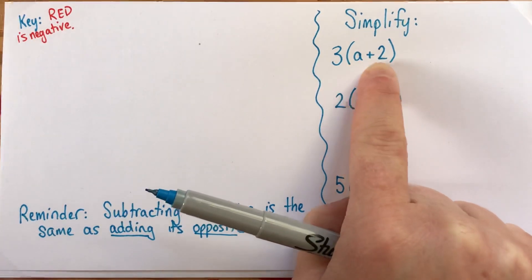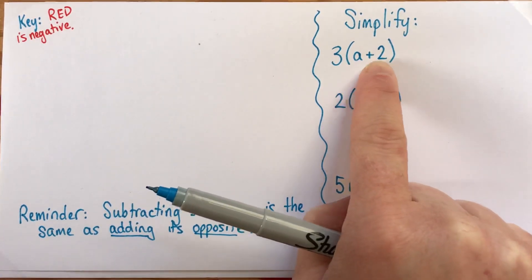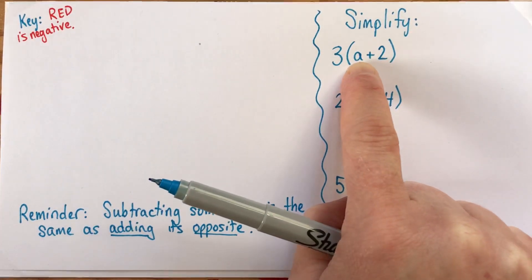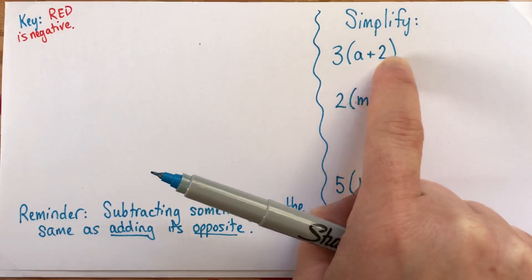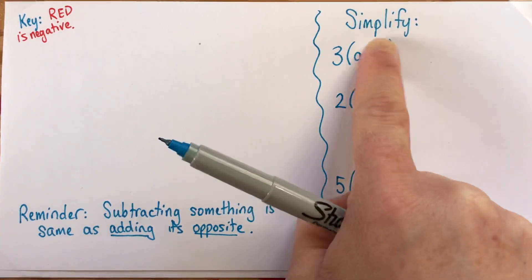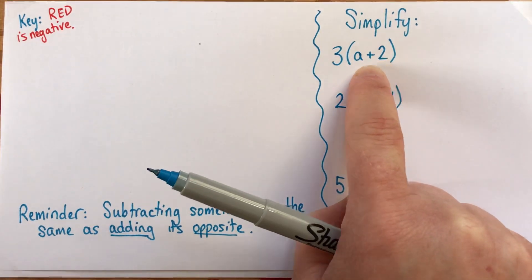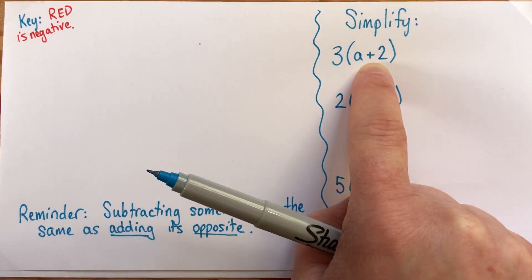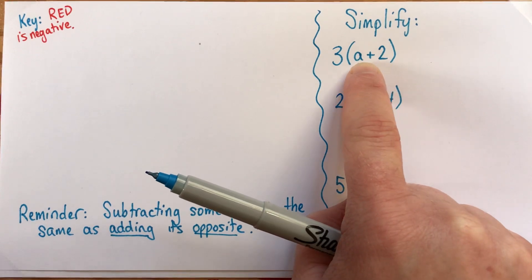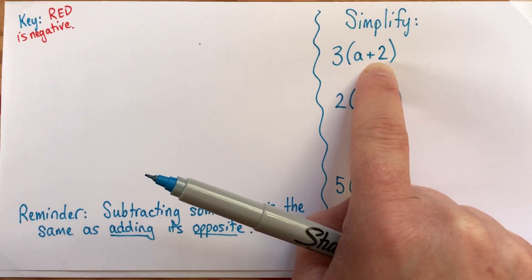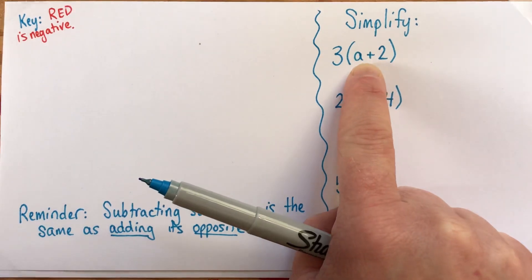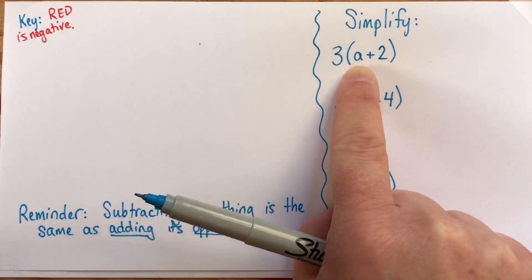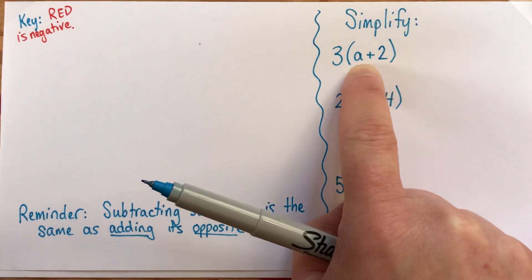A lot of times people think of brackets as an indicator of what to do first, and then they say there's nothing I can do here with my a plus 2. I'd like you to think of brackets as a grouping symbol generally. They make this whole a plus 2 thing into one thing — they group the a and the plus 2 together. Sometimes it's an indicator that you should do the operation inside the brackets first, but other times it just indicates that this is a unit, one group here.